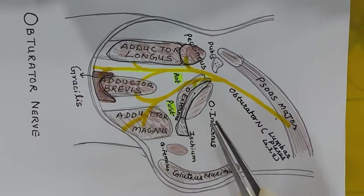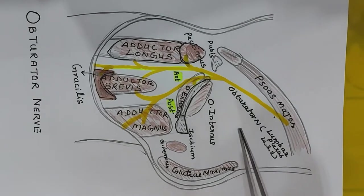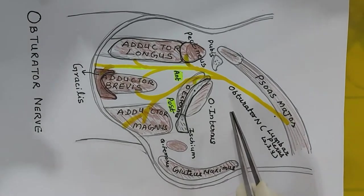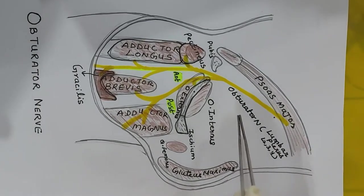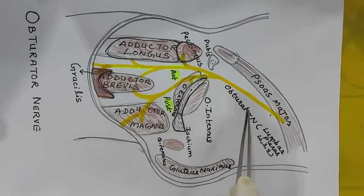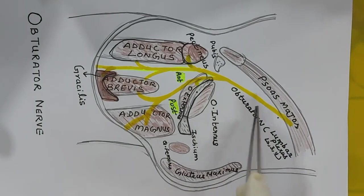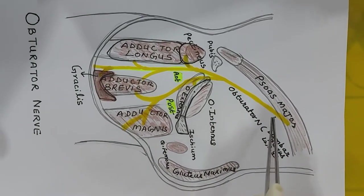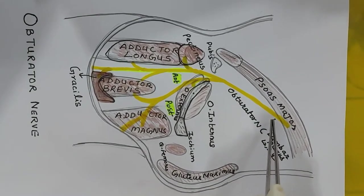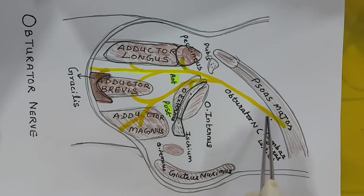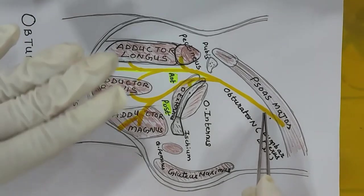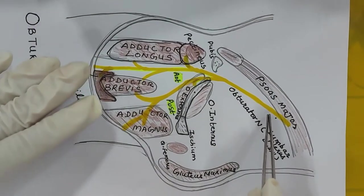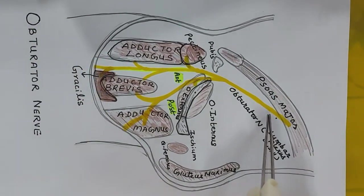Regarding the nerve supply of these muscles, before studying it in the dissected specimen we will look at a diagram showing the obturator nerve. The obturator nerve is the main nerve supplying the adductor compartment of the thigh.